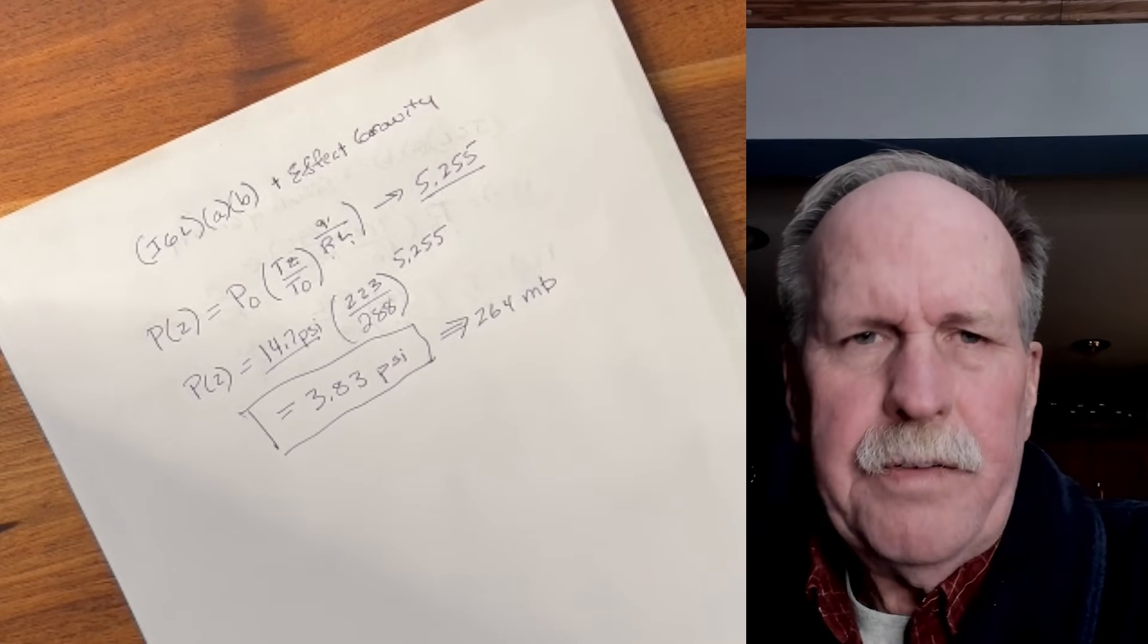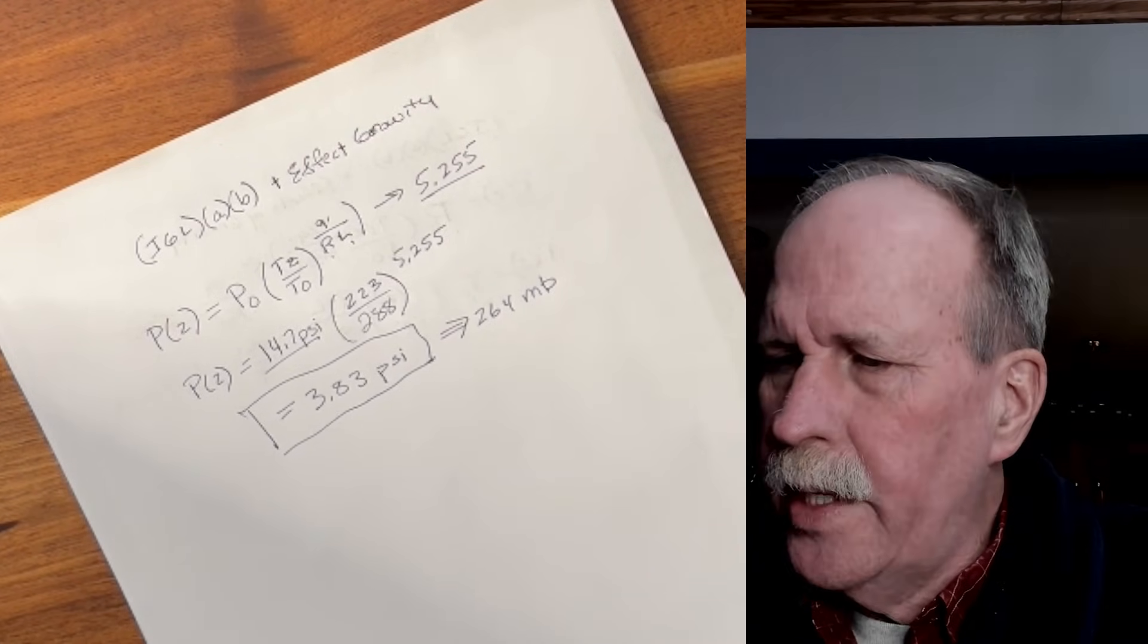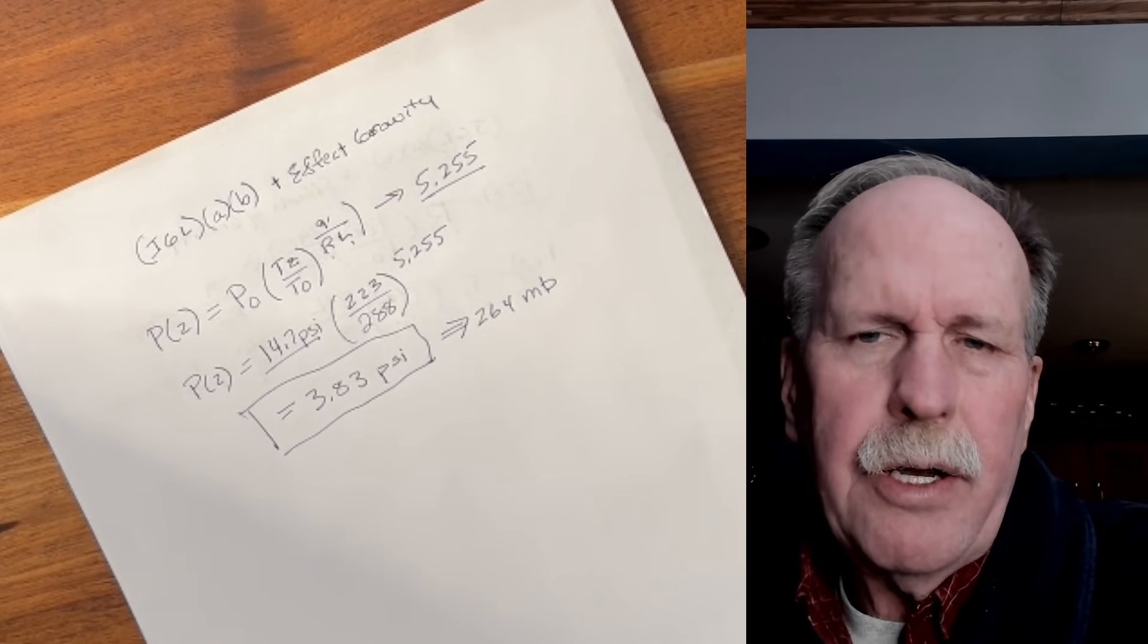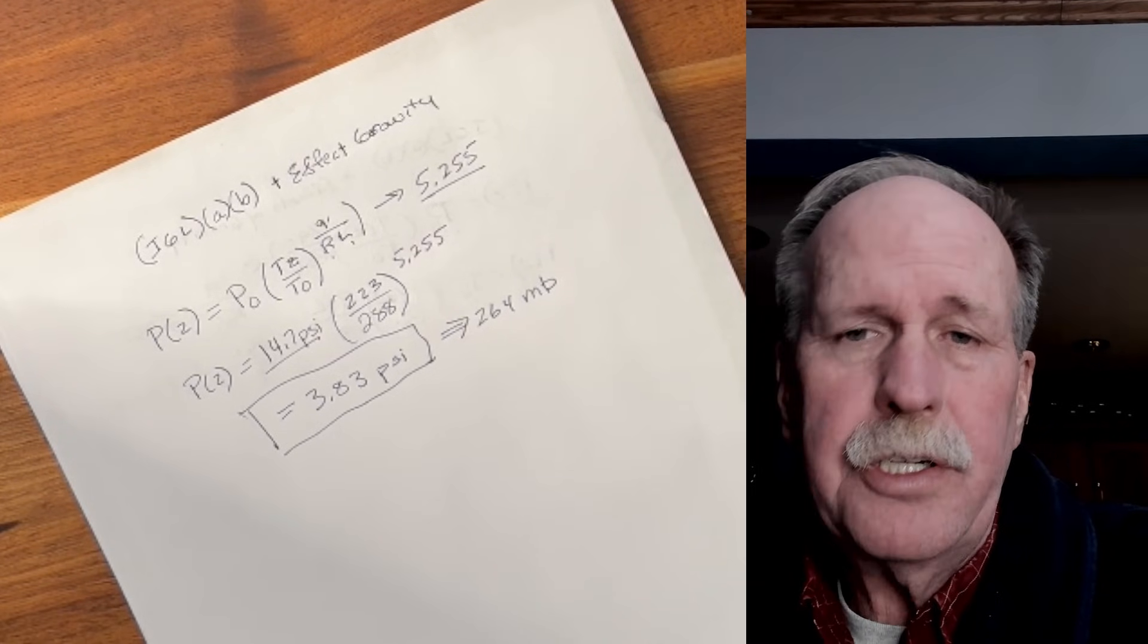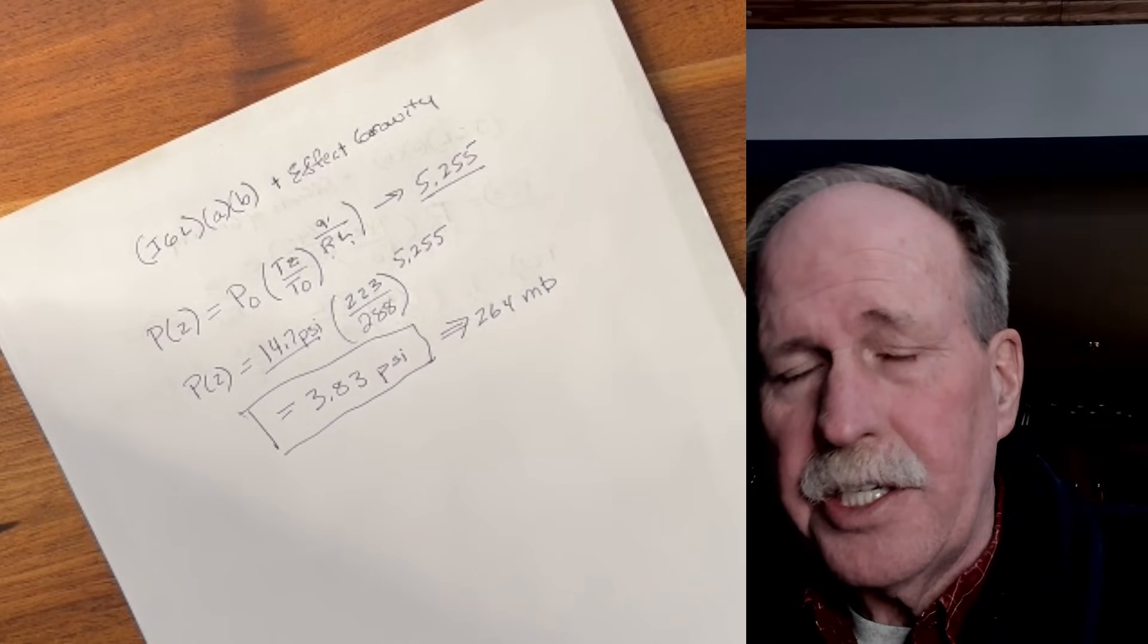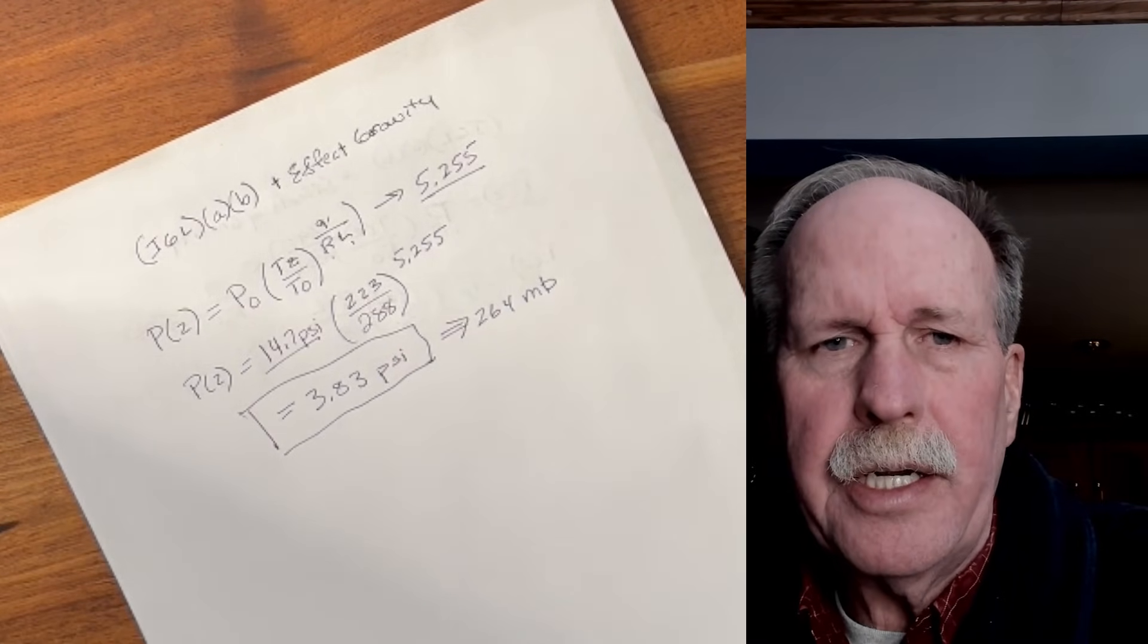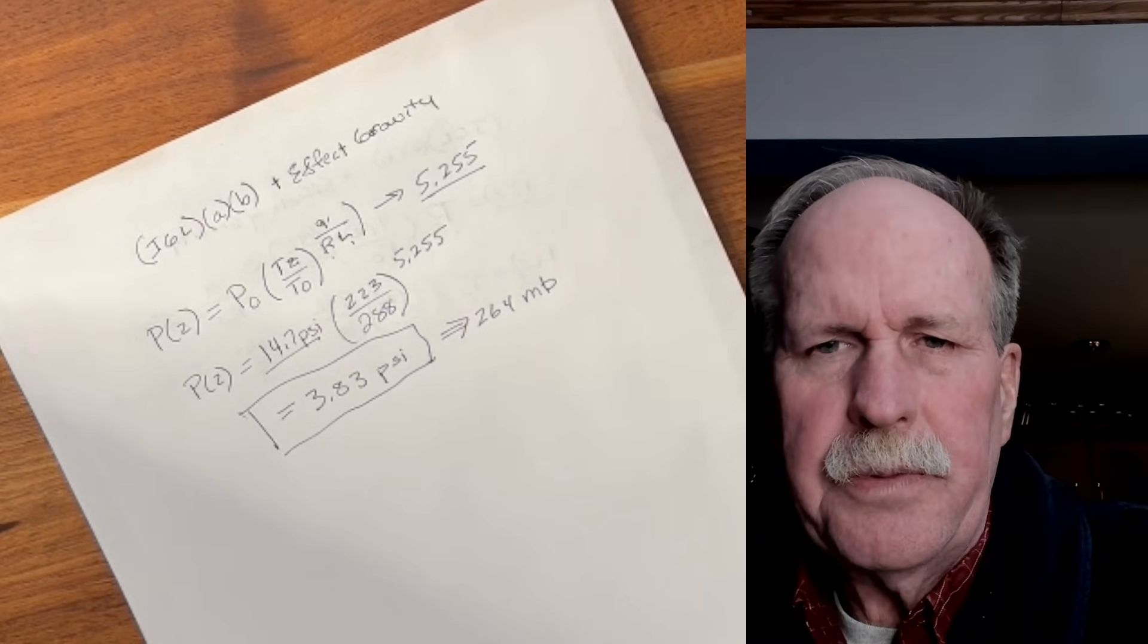And there you have it. I've done the math. That comes out to 3.83 psi, which is about 264 millibars. Recall that 9.2 kilometers up, 9,200 meters, is about 300 millibars. At 10,000 meters, it's going to be a little bit less. And that's what we're seeing here, 264 millibars.